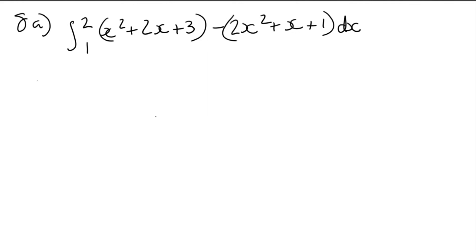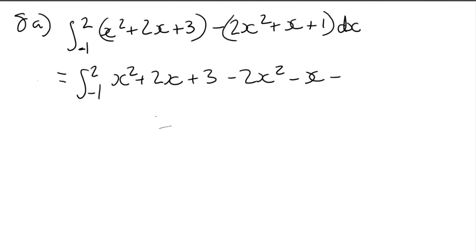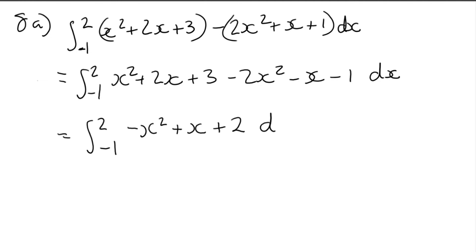Question 8a: express the shaded area enclosed between the two curves as an integral. It's upper minus lower, and we've been given the points of intersection at 2 and negative 1. To find which is upper and which is lower, imagine the shaded area is sand — if you remove the lower curve, the sand falls to the ground. The bottom curve is clearly 2x squared plus x plus 1. So it's integral from negative 1 to 2 of (upper minus lower) dx. Expanding and simplifying gives minus x squared plus x plus 2.